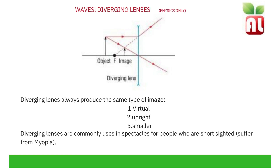To draw a ray diagram for a diverging lens: from the top of the object, draw a line parallel to the principal axis to the lens. From the top of the object, draw a straight line through the principal axis and where it crosses the lens. From the focal point, draw a straight line upwards to where the parallel line crosses the lens. Where the two lines cross is where we see our image, in front of the diverging lens.